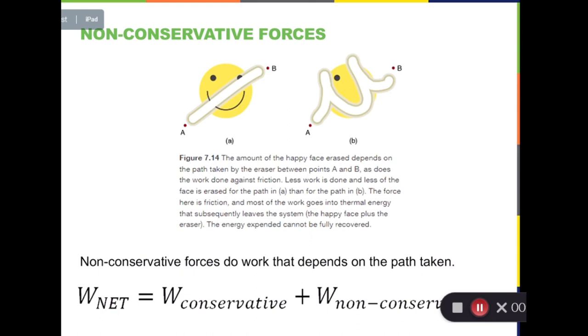One by conservative forces and the other one by non-conservative forces. And we call them W conservative and W non-conservative. The network is equal to the sum of them.